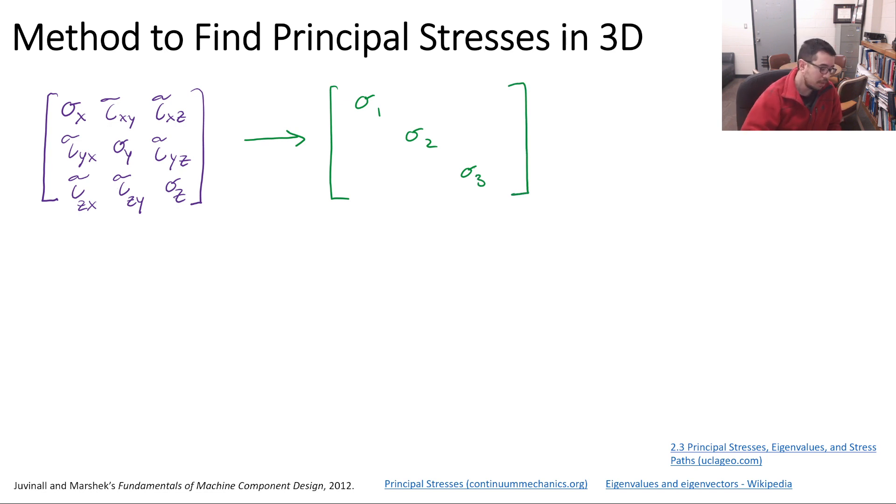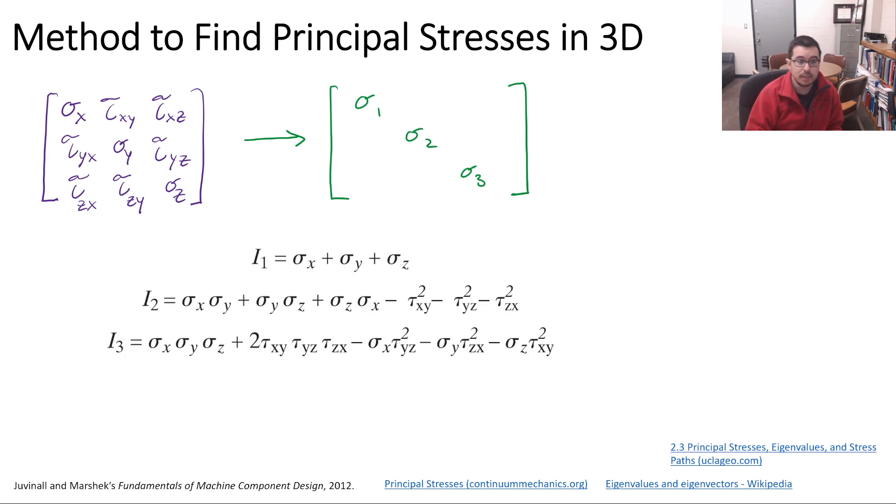What it's saying is that we can set up a problem where this I1 is one invariant, and sigma x, sigma y, sigma z, these are going to be the same. The I2, similar thing. I should say the summation of sigma x, sigma y, sigma z, are going to be the same. Same thing with I2, same thing with I3.